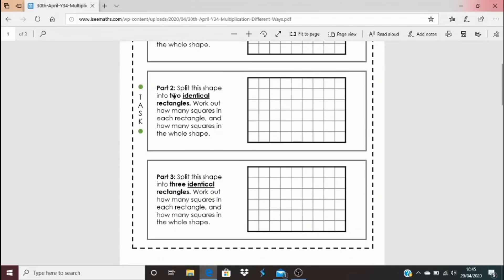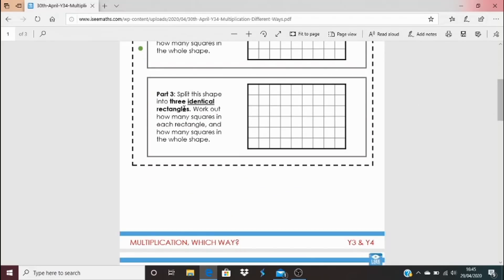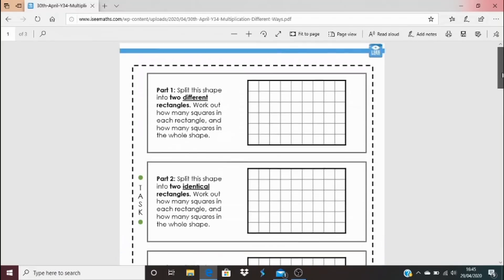And then it says part 2, it's the same shape but this time split this shape into two identical rectangles, so rectangles that are the same. How can that be done? How many squares in each section? Can you write the multiplication fact there? And what about, could you think of a way of splitting into three identical rectangles? How can that be done? And again that's a way of trying to work out the number of squares in total, a version of multiplication.